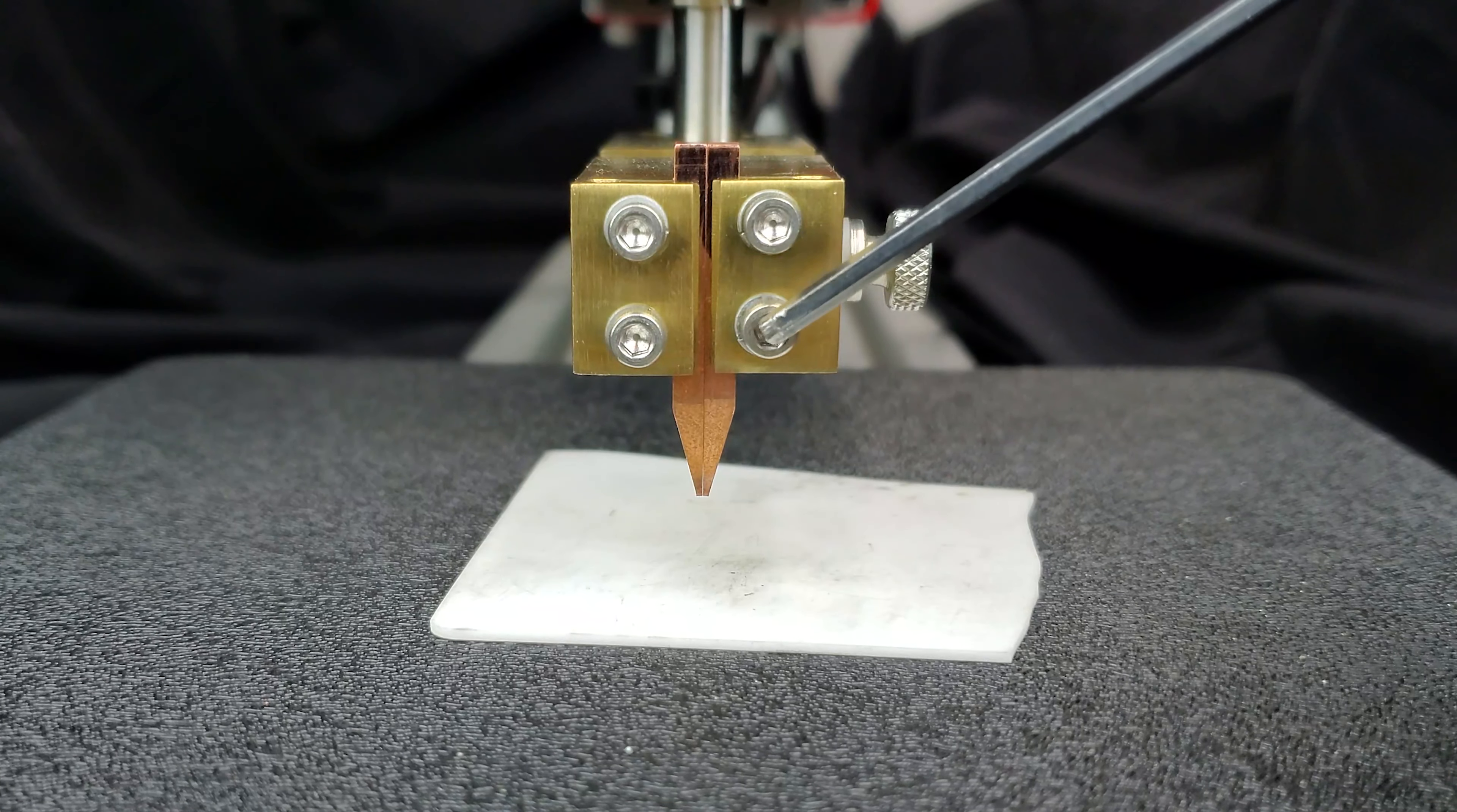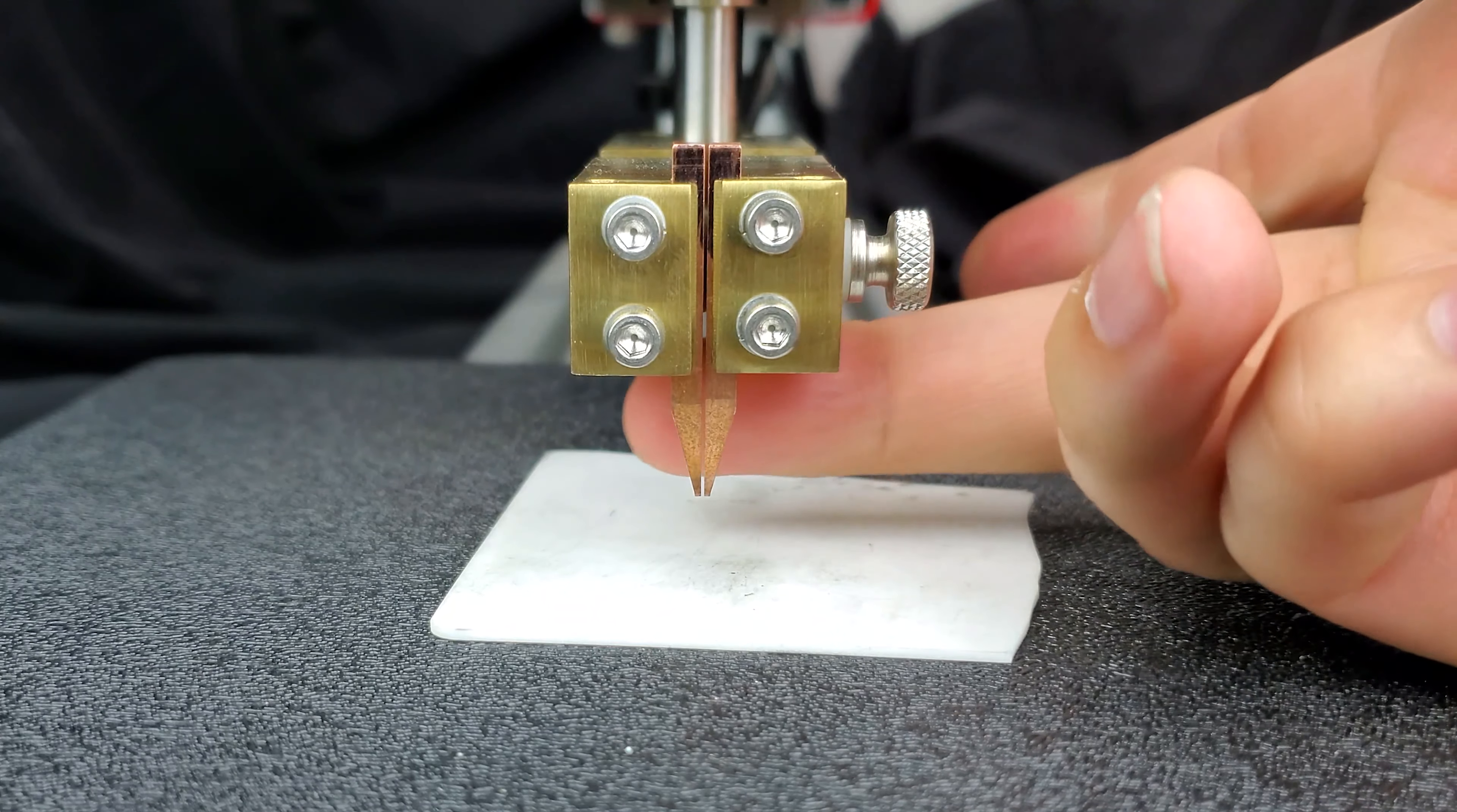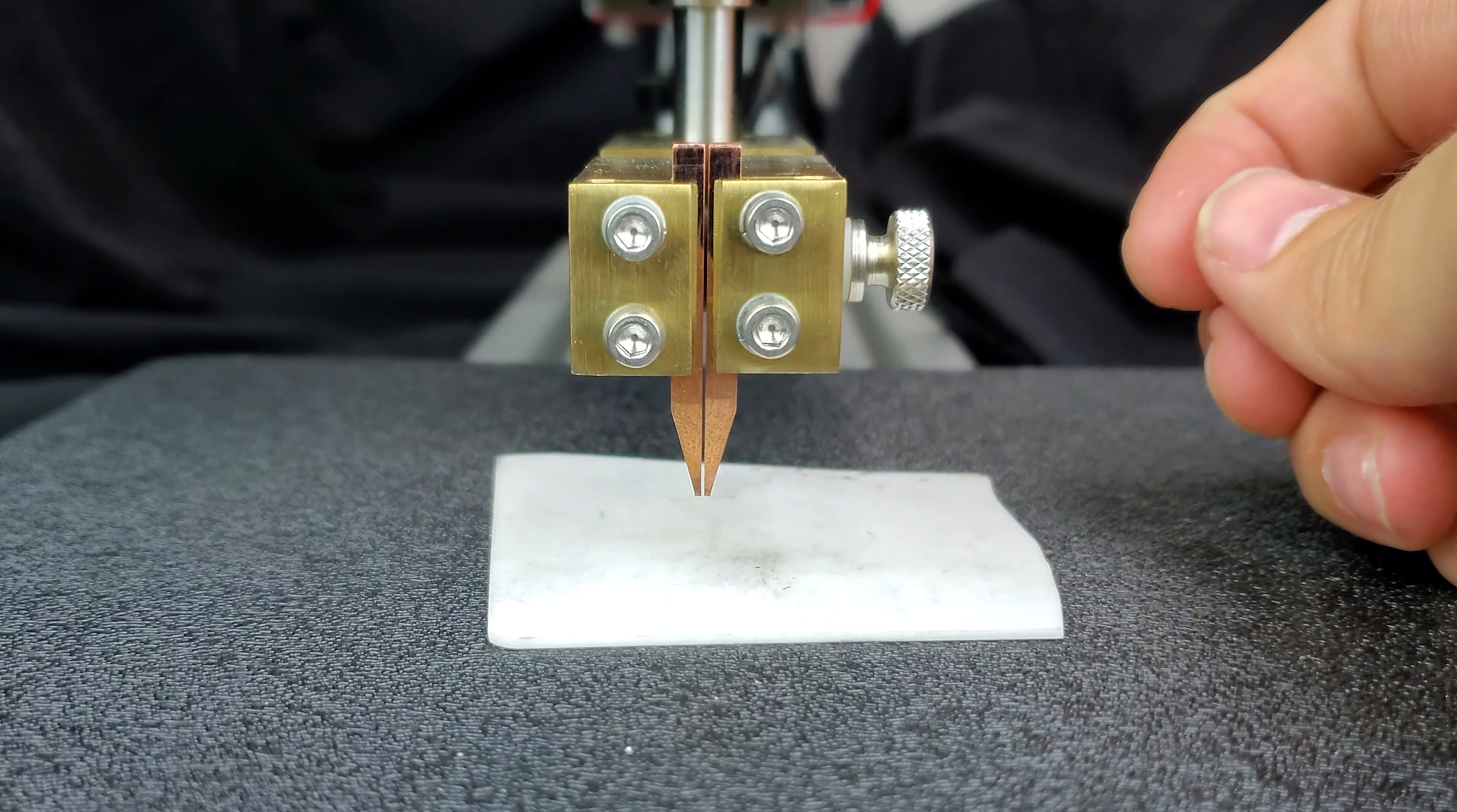And then we're going to screw these four screws tight and then loosen this screw to separate the electrodes. As you can see, there's a small space. This is important for this type of electrode in order to weld properly.